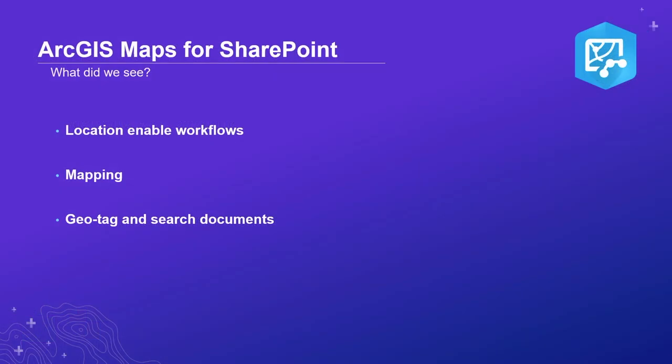Thank you, Na. So what did we see? We saw how we could do that workflow — we enabled the workflow where the SharePoint list had that spatial location tabular data in it, we were able to map it, and not only that but you can also geo-enrich it if you want. Once we had that map created, we could pull in reference content, have more control over the map with styling and pop-ups, and then that other capability — the ability to map your documents and associate them with features in your GIS, so that as an end user you can easily find and search for those documents.